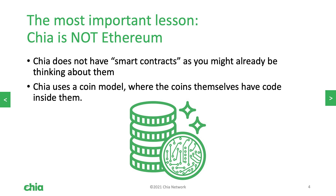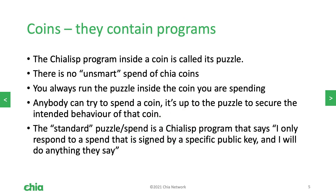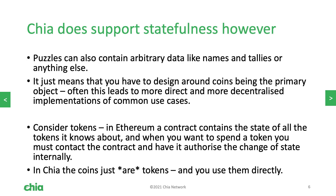Chia is not Ethereum. In Ethereum, smart contracts are objects that exist on the blockchain that you can interact with. Chia doesn't support this. Instead, we use a coin model where the coins themselves have the code inside and you interact with coins. The program that is inside of a coin is called its puzzle, and there are no non-smart spends of Chia coins — you always have to run that puzzle that's inside the coin. Anybody can try to spend the coin, so it's up to the puzzle to secure the intended behavior. One common misunderstanding is that this means we don't support statefulness. This is incorrect — the coins themselves are state. The puzzle inside a coin represents state; you just have to design around coins being the primary object.